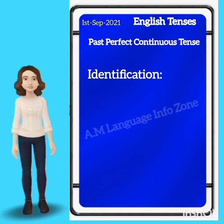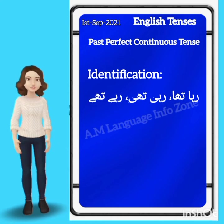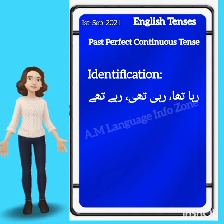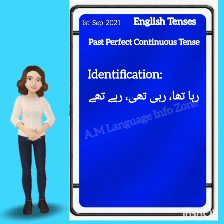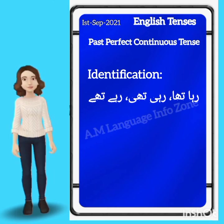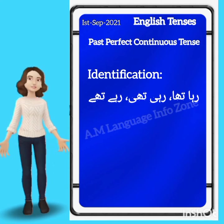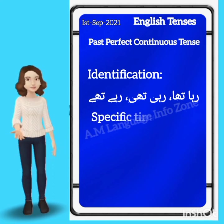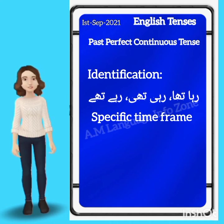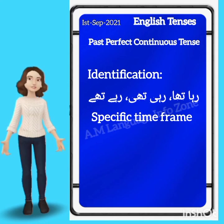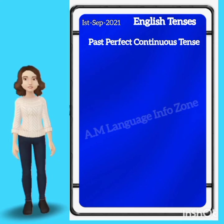When we talk about identification of Past Perfect Continuous Tense in Urdu or Hindi sentences, we look at the end of the sentence. With Past Perfect Continuous Tense, the sentence contains a specific time frame — for example, 'the past few weeks.' If we have past school context, it is Past Continuous Tense.